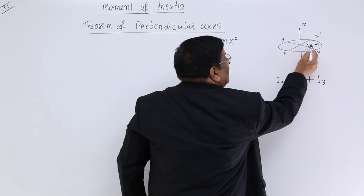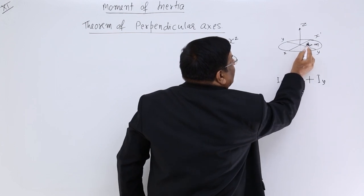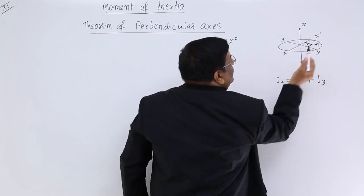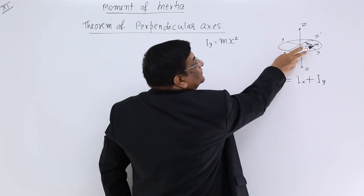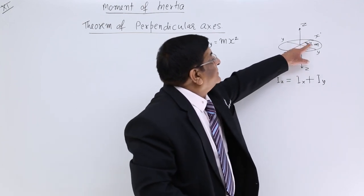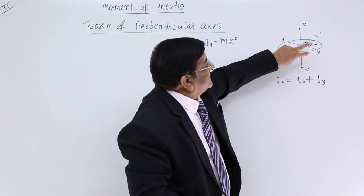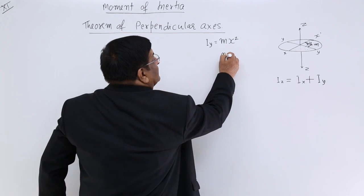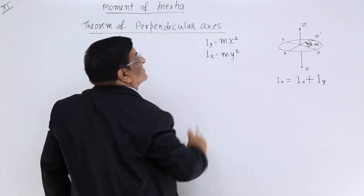Now this particle has a y coordinate equal to y — the distance parallel to the y-axis. If I rotate it about the x-axis, then the moment of inertia will be m multiplied by the square of the radius, and the radius is y. So it is my², which is the moment of inertia about the x-axis.